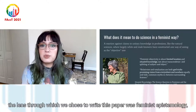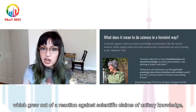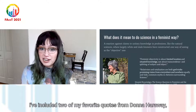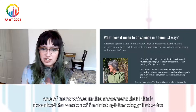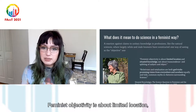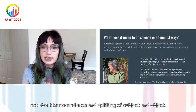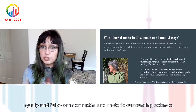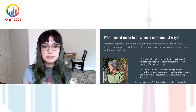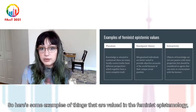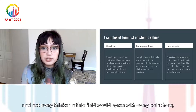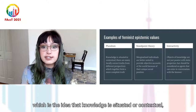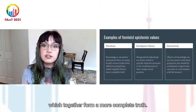The lens through which we chose to write this paper was feminist epistemology, which grew out of a reaction against scientific claims of unitary knowledge where largely white and male knowers have constructed one way of seeing as the objective one. I've included two of my favorite quotes from Donna Haraway, one of many voices in this movement. Feminist objectivity is about limited location and situated knowledge, not about transcendence and splitting of subject and object. Relativism and totalization are both god tricks promising vision from everywhere and nowhere equally. One value in feminist epistemology is pluralism — the idea that knowledge is situated or contextual, and there are many locally correct truths from different perspectives which together form a more complete truth.